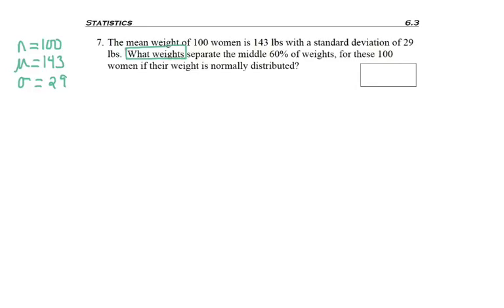Okay, this one asks for the weights. What weights are separating that? So remember, that means I'm finding a data value, so I'm working with the table backwards since it's not probability or area, and I have to use the conversion formula. Also, another twist on this problem, it asked for the middle 60%, and we haven't seen that one in a while, so we have to remember how to find middle z-scores.